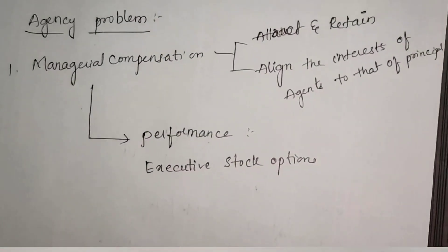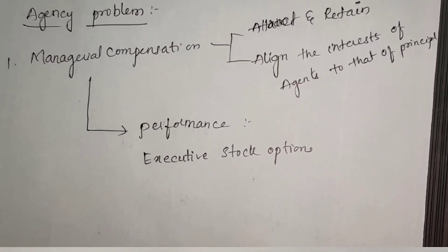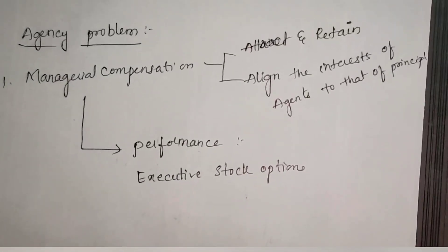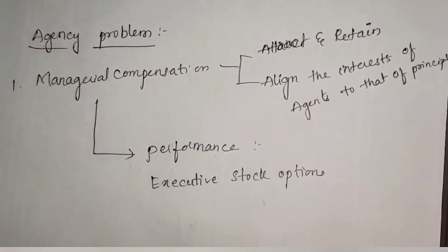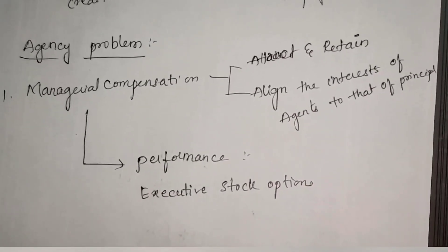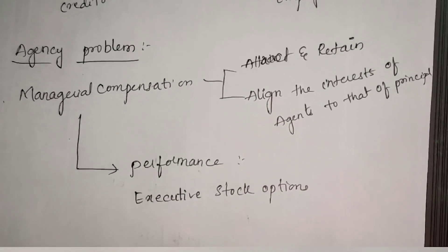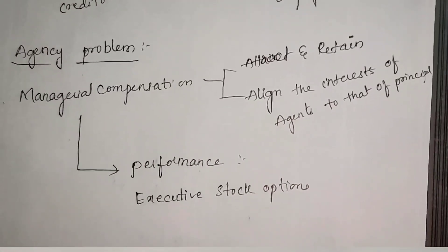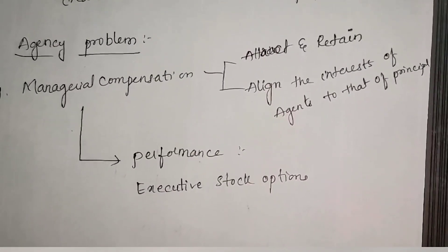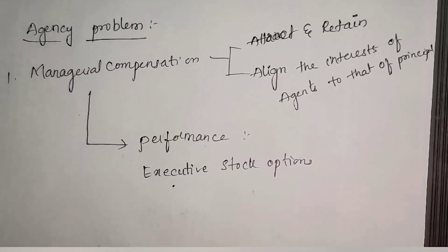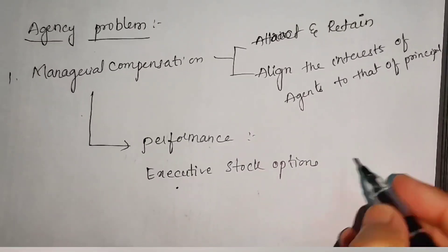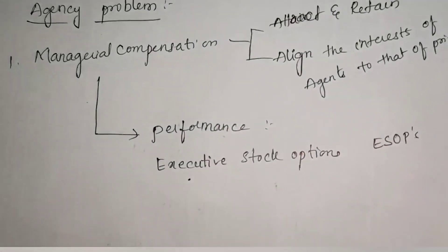If you improve your performance, ultimately they will pay more amount to you; bonuses will be paid to you. That is what performance shares are. Another dimension is that if you make the agent a part of the organization or a shareholder, ultimately he will also think in line with the principal in order to maximize the shareholding value. For that reason they give executive stock options, commonly known as ESOPs. This is one retention and attraction process.